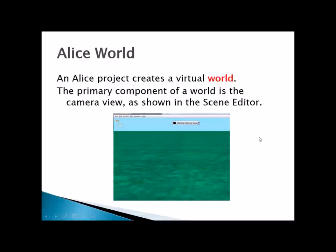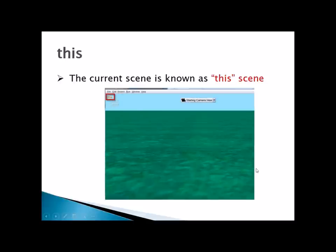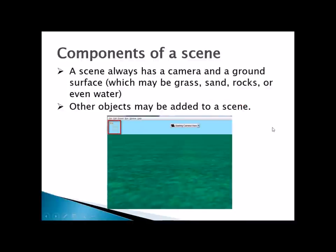An Alice project creates a virtual world. The primary component of a world is the camera view, as shown in the scene editor. The current scene is known as 'this', and you can see it in our object tree. A scene always has a camera and a ground, visible in the object tree — you can't delete them — but you can also add other objects.